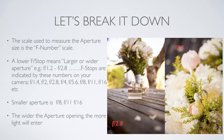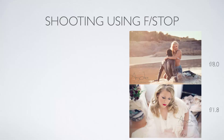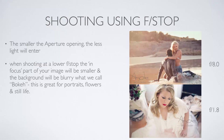The wider the aperture opening the more light will enter, and the wider aperture corresponds to the smaller numbers. The smaller the aperture opening the less light will enter. Once you've got that concept you can start to work with it. When shooting at a lower f-stop, the in-focus part of the shot will be smaller.